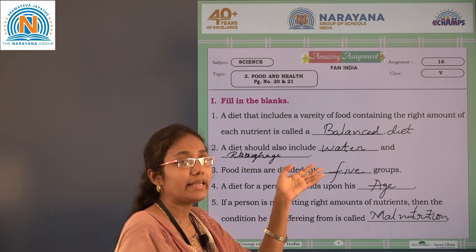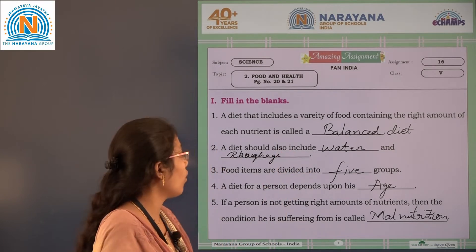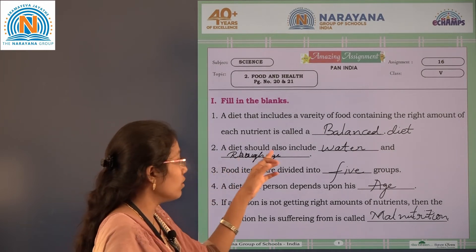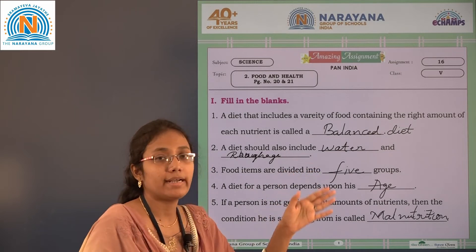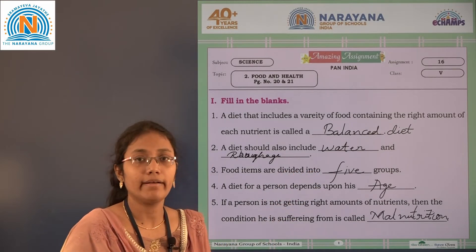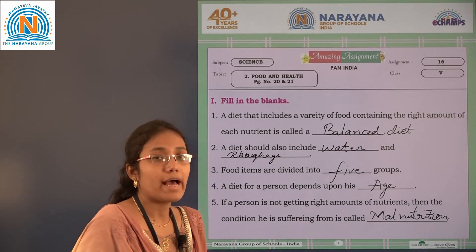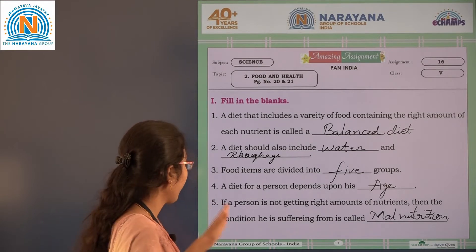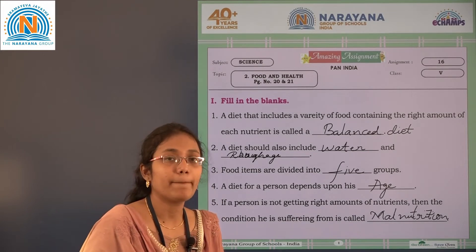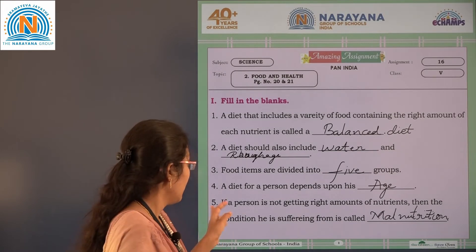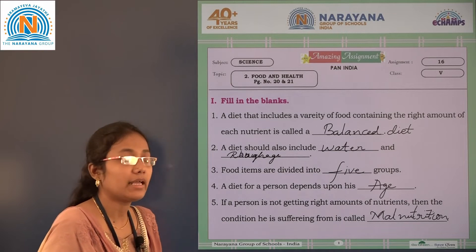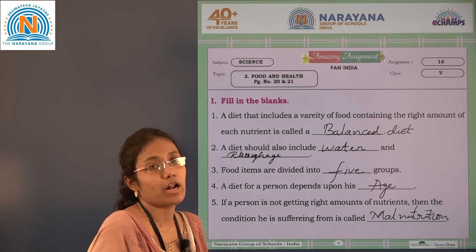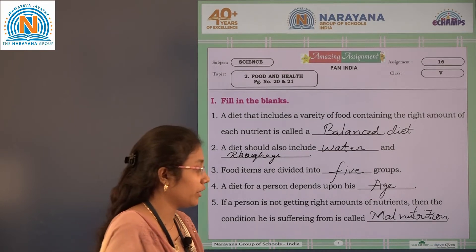Let us revise: a diet that includes a variety of food containing the right amount of each nutrient is called a balanced diet. A diet should also include water and roughages. Food items are mostly divided into five groups. A diet for a person depends upon his age. If a person is not getting the right amount of nutrients, the condition is called malnutrition.